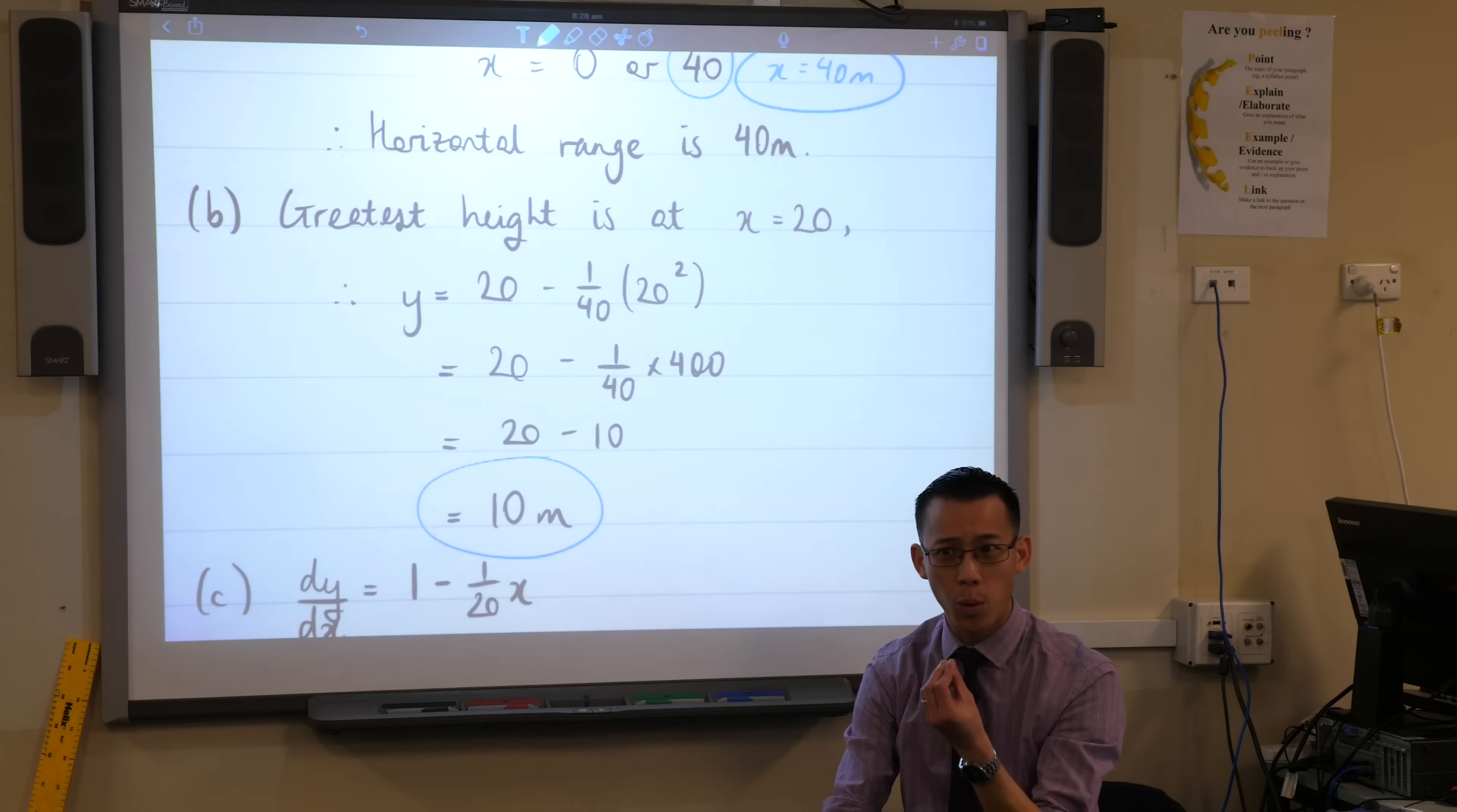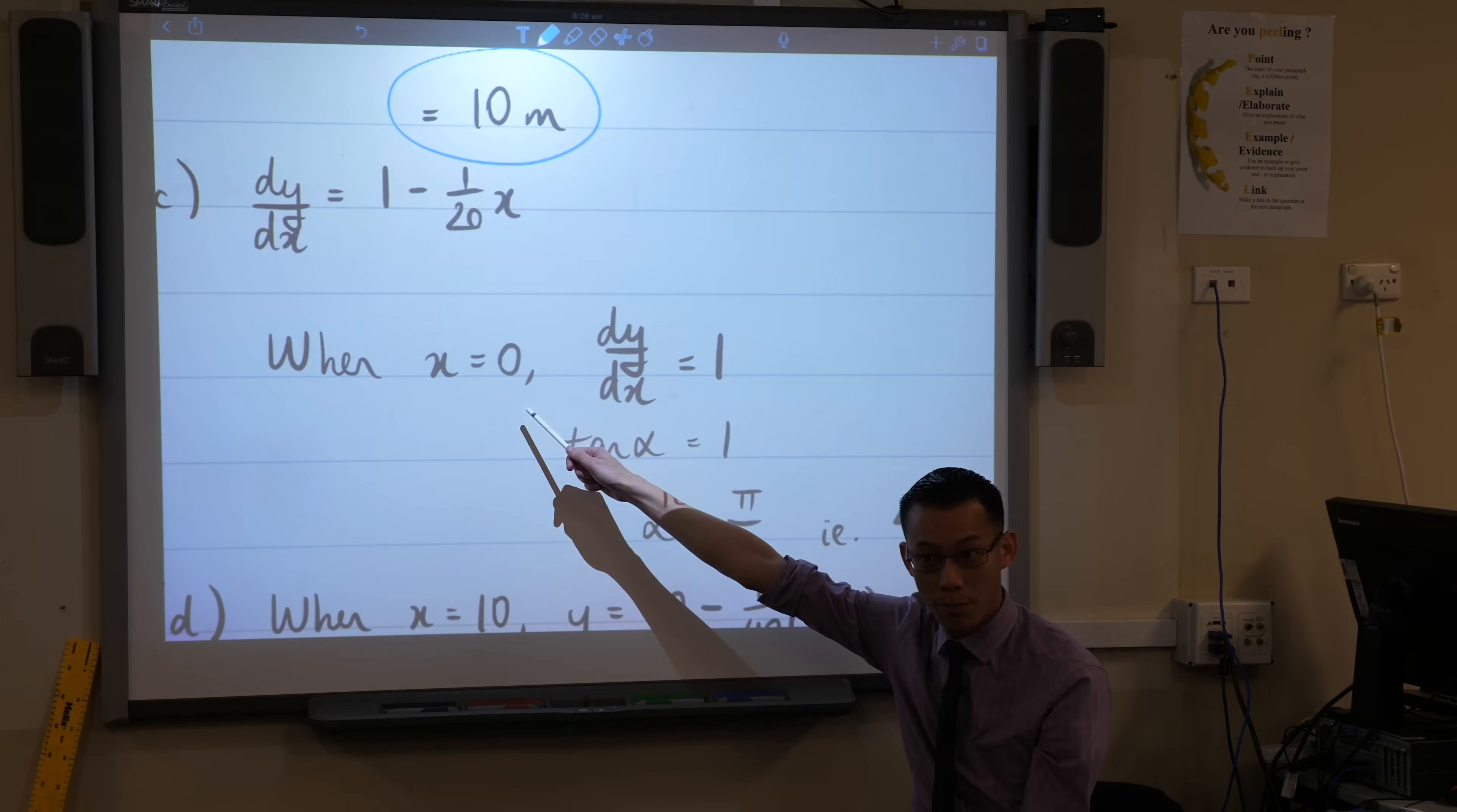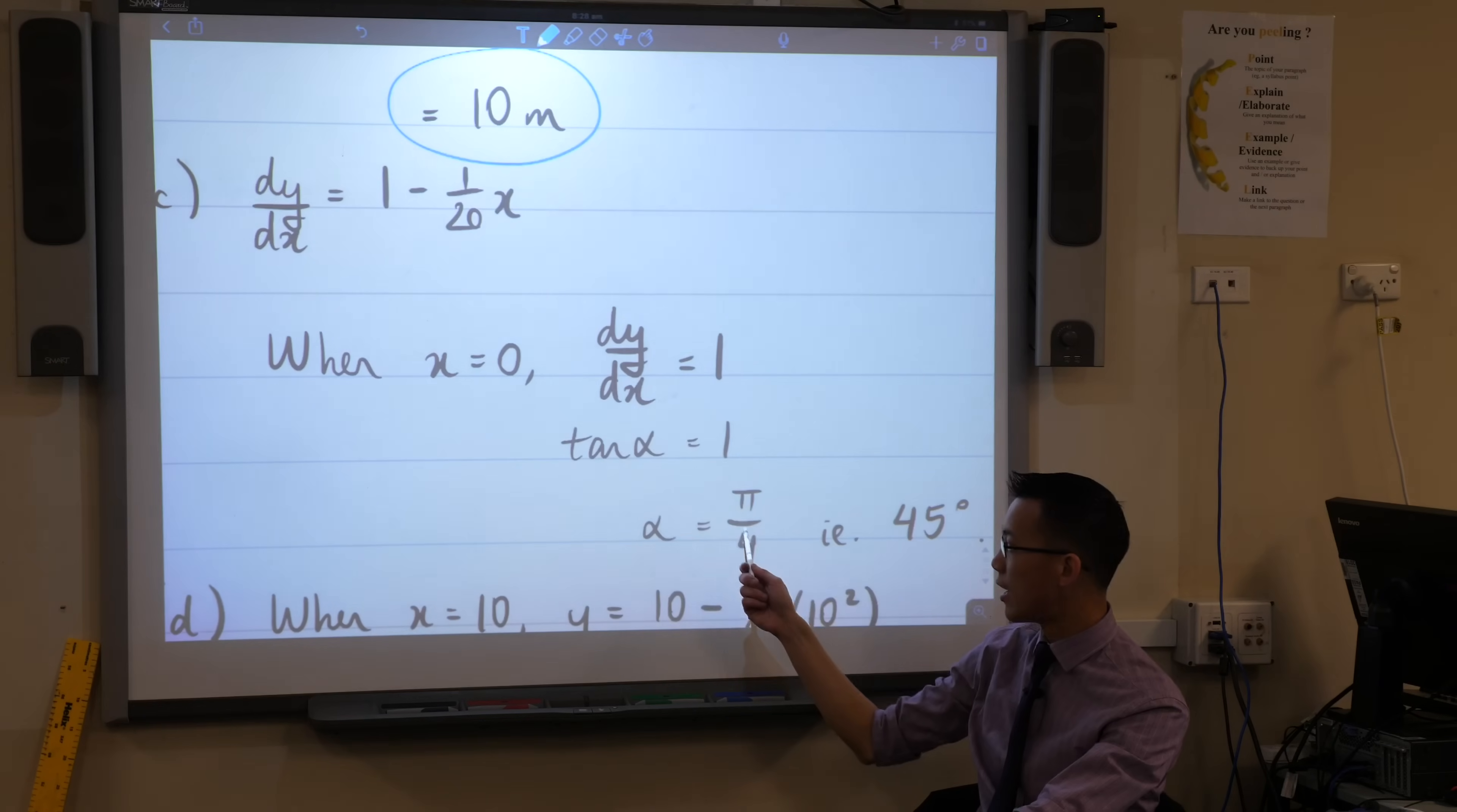Now, then I think they ask you for what the angle of projection is. What is the initial angle at which it's fired? That's why you can see I need to bring in the derivative, because that's what tells me about the gradient, which is where I get angles from. You just put in your initial value, like so. x = 0, because that's where you get your direction from. You get this value, and you say tan(alpha) = 1.